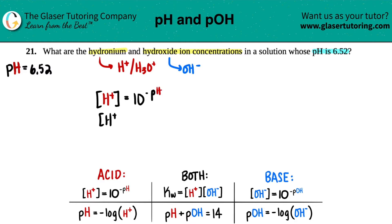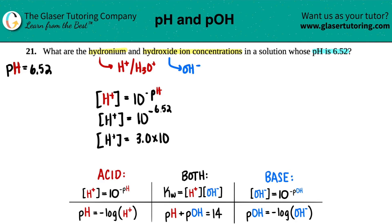So H+ equals 10 raised to the negative 6.52. If we want the correct number of sig figs, you only take into account the sig figs after the decimal. Since there were two sig figs after the decimal, you're only allowed two total sig figs. So this would be 3.0 times 10 to the negative 7th — and that's in units of molarity. Anytime we're looking at a concentration, it's always going to be molarity. So we've answered the first question: the hydronium concentration is 3.0×10⁻⁷ M.